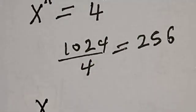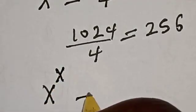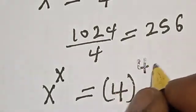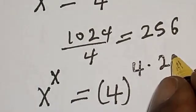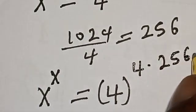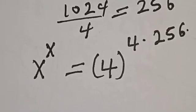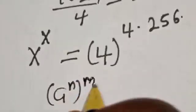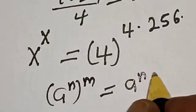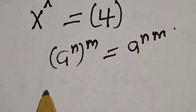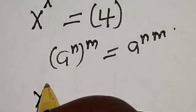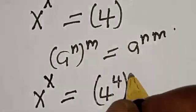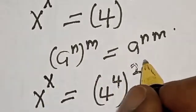Therefore, s raised to the power s will be equal to 4 raised to the power 4 multiplied by 256. Remember this rule: if you have a raised to power n, raised to power m, it equals a raised to power n×m. So this becomes s raised to the power s is equal to 4 raised to the power 4, raised to the power 256.